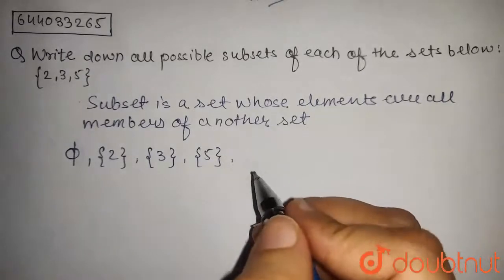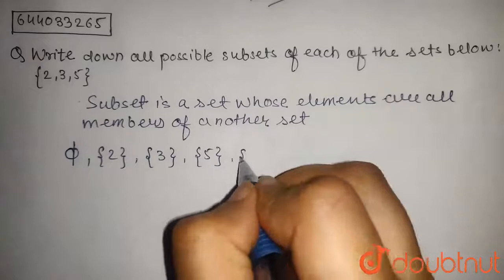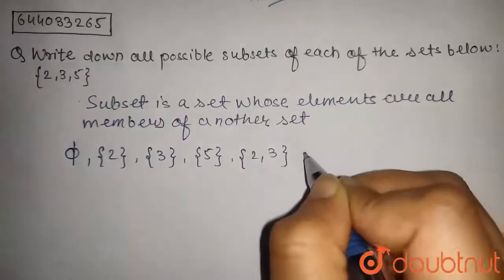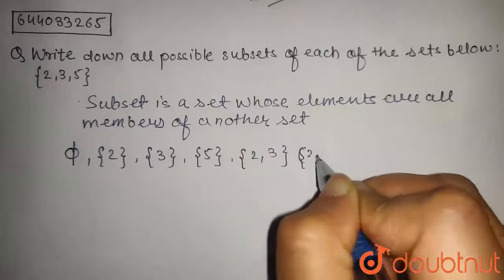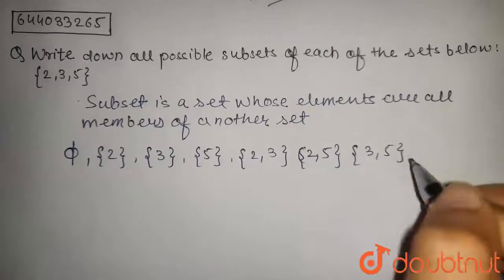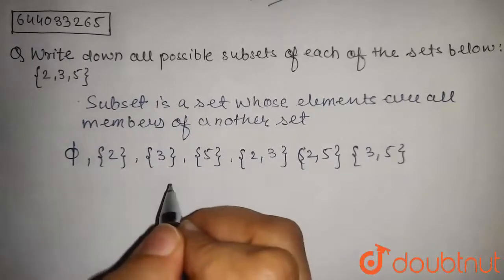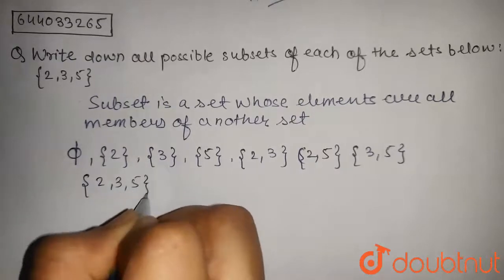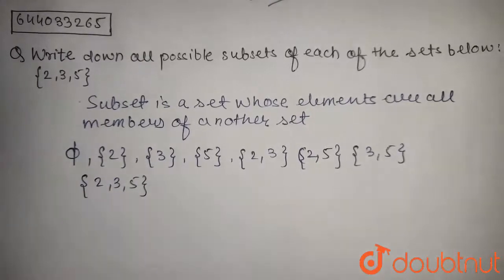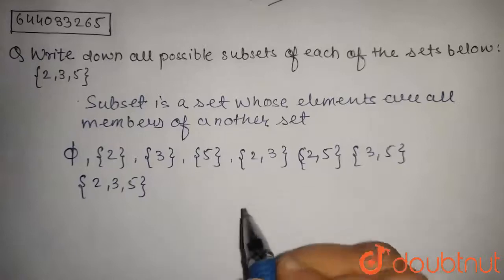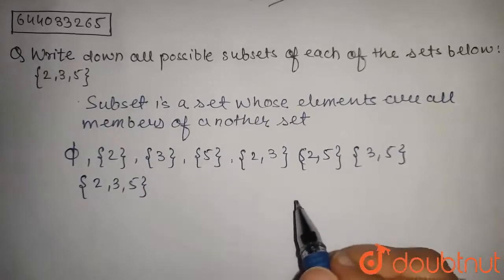Now with 2 elements: it will be 2, 3; then 2, 5; then 3, 5; and then 2, 3, 5, as a set is a subset of itself. So we have these 9 possible subsets.